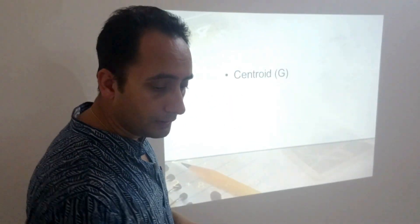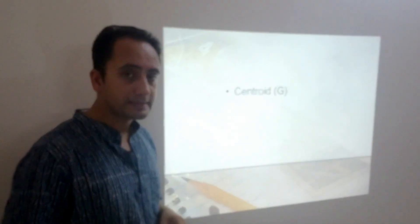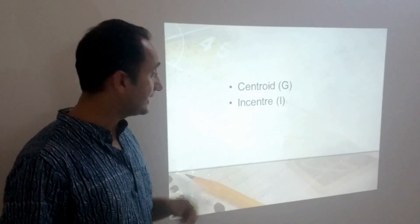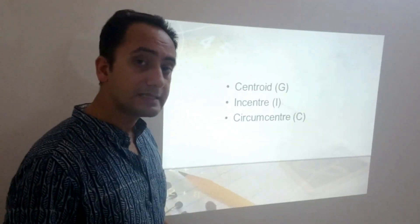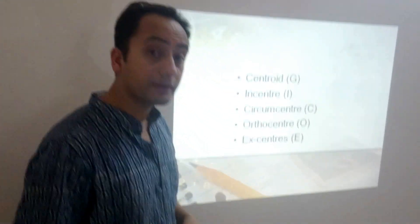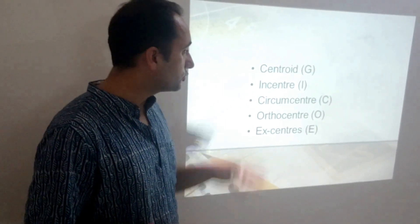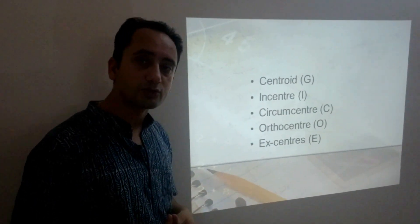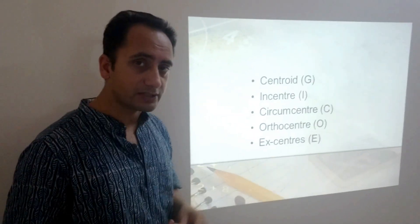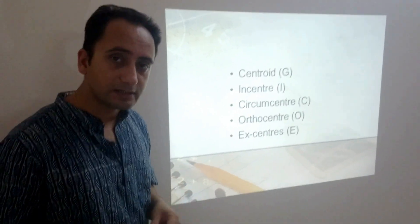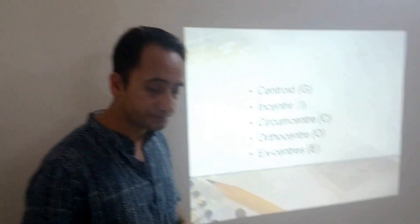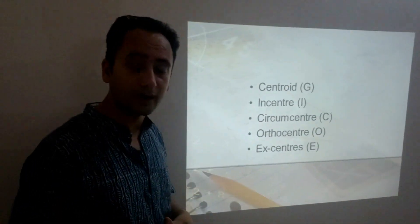First of all, Centroid, represented by G. Next one is Incenter. Third, Circumcenter. Fourth one, Orthocenter. And the last one is Excenter. So these are five basic centers of triangles which I shall discuss in this lecture. Other than this, there is one more center known as the nine-point center, or the center of a nine-point circle, which I shall discuss in my next lecture. So let us discuss all these centers one by one.